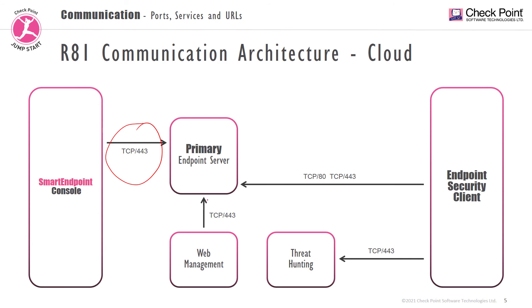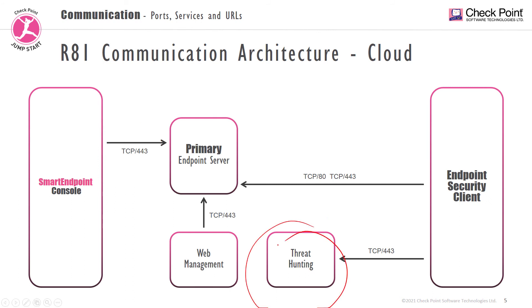Both the web interface and Smart Endpoint will use HTTPS to manage the server. Another cool component on the cloud is the use of threat hunting — the client communicates with the threat hunting server in intervals of between 5 and 10 minutes depending on the activity. Traffic will be encrypted using HTTPS. Thank you for watching and I'll see you in the next module.